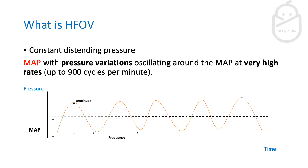So what is high frequency oscillation? Basically it's a constant distending pressure. You're giving a continuous MAP with pressure variation oscillating around this MAP at a very high rate, which can reach up to 900 cycles per minute. As you can see in the graph, the dotted line represents the continuous MAP, with waves oscillating around it. The height of the wave is what we call amplitude, and the frequency is how many cycles per minute we're giving.